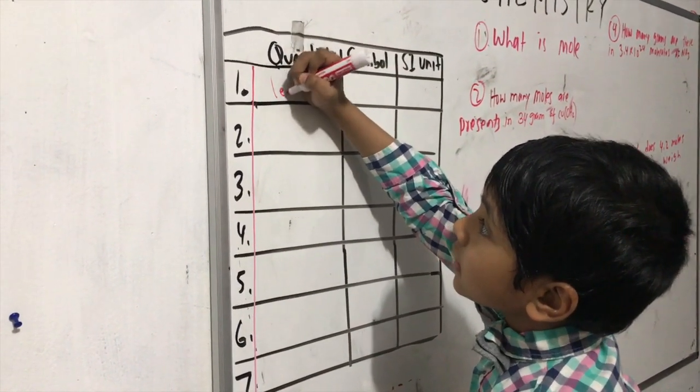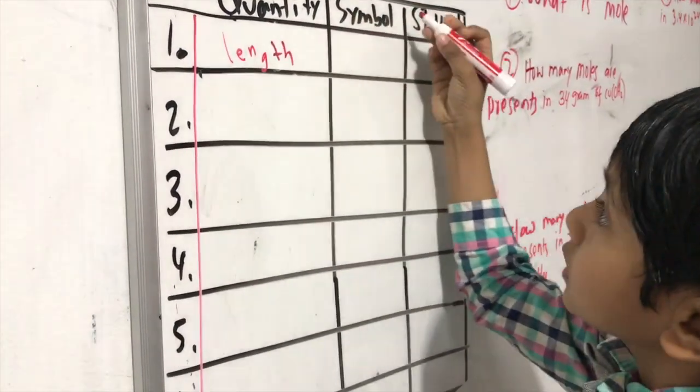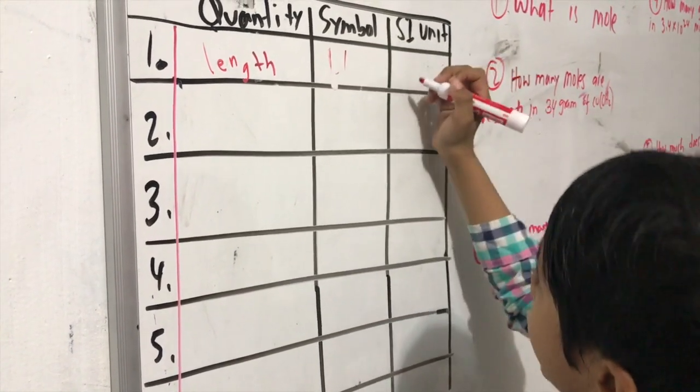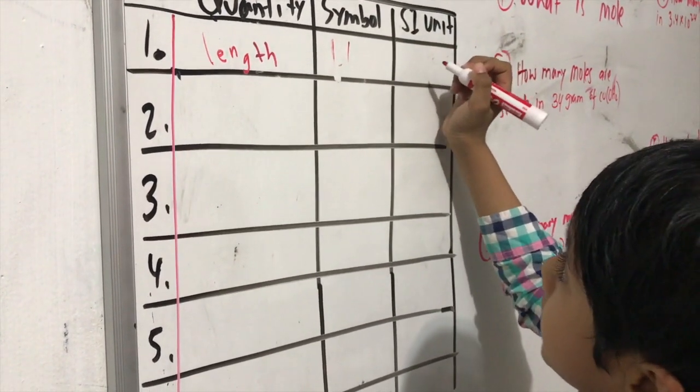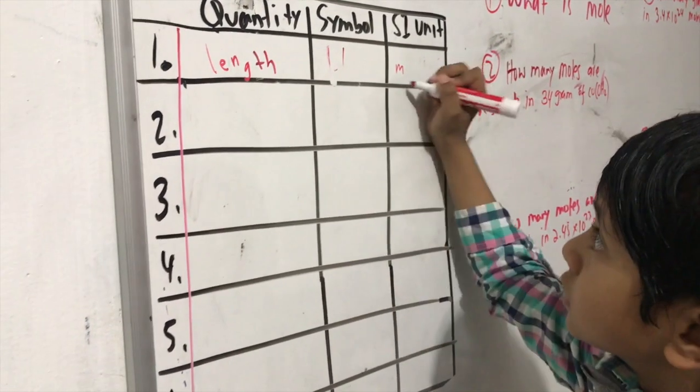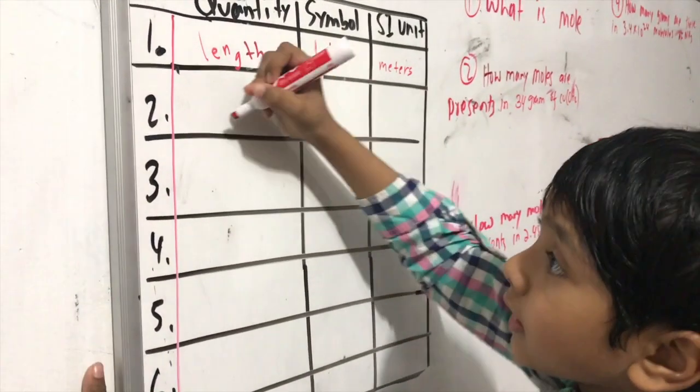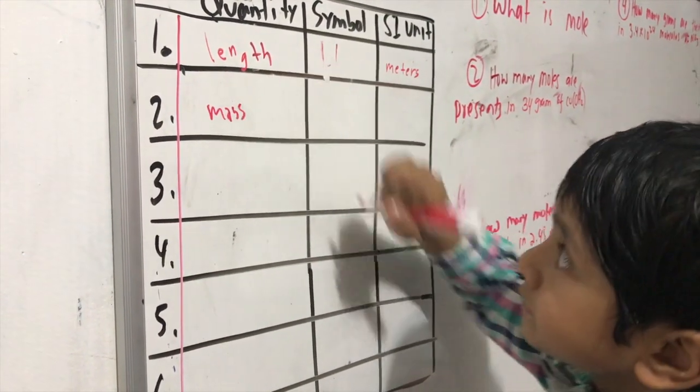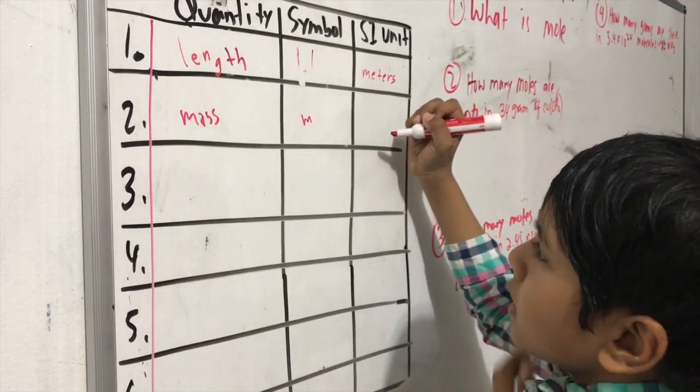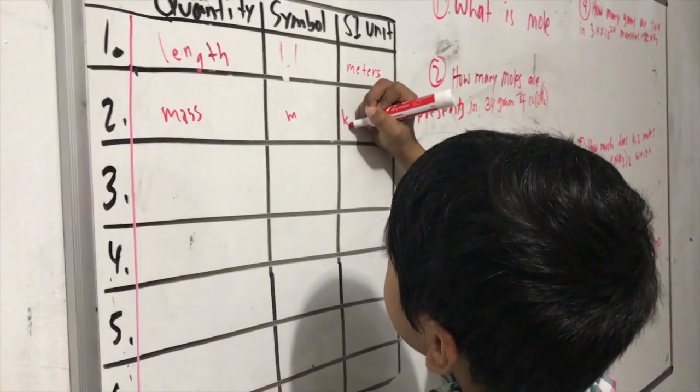Quantity number one is length. The symbol for length is L. And the SI unit is meters. The second one is mass. The symbol for mass is M. And the SI unit for mass is kg.